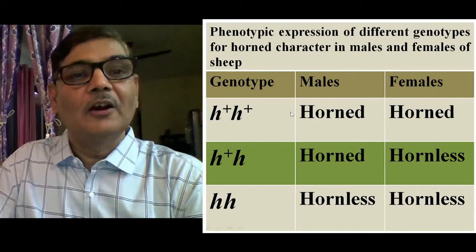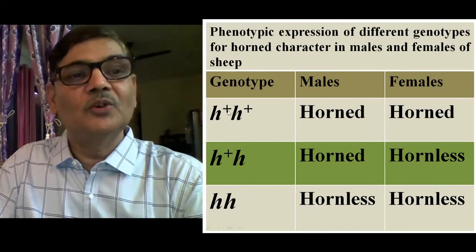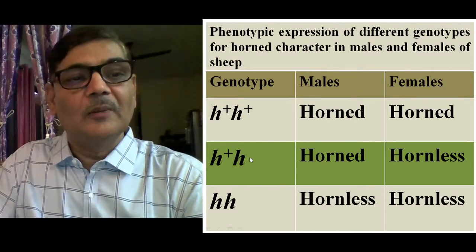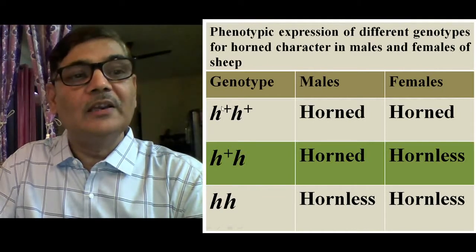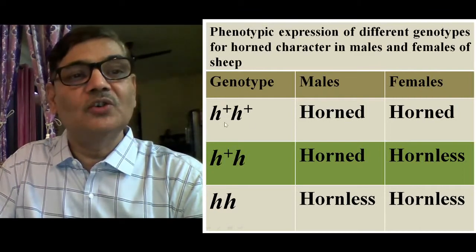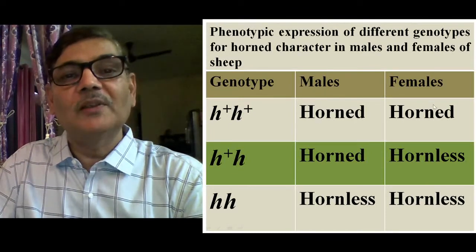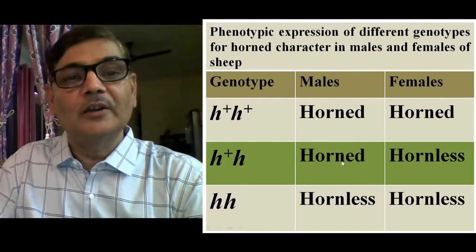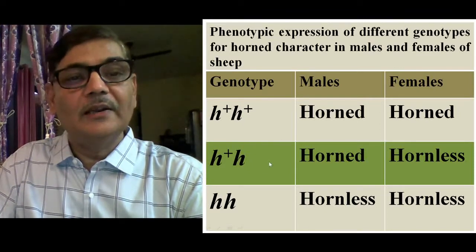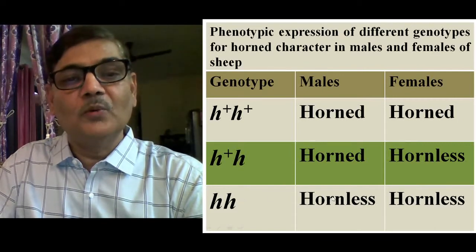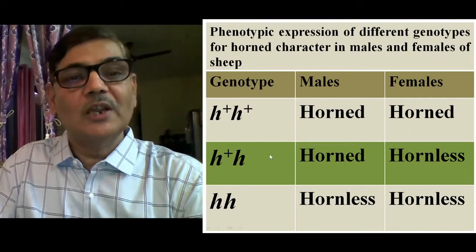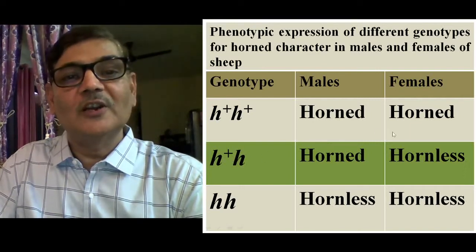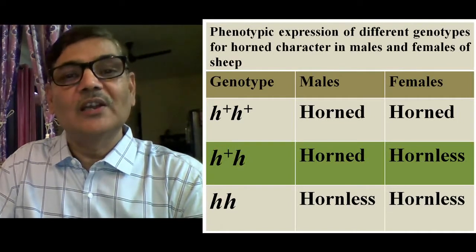Here is the example of presence of horns in sheep. Just like baldness, three different genotypes are possible due to an allele causing horn expression. With genotype H-plus, H-plus, both male and female individuals are horned. With the heterozygous genotype H-plus, H, males are horned but females are hornless. And with genotype small h, small h, both males and females are hornless. The same genotype is expressed in one sex but not in the other — this is a sex-influenced trait.